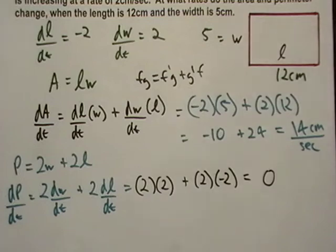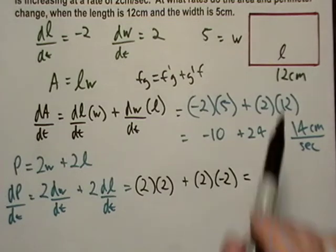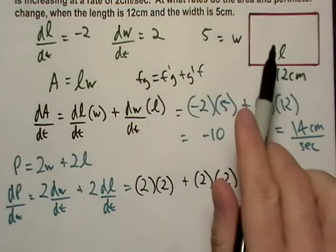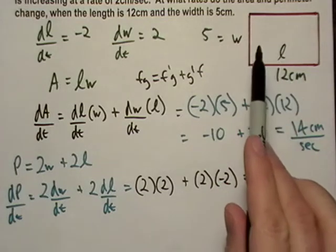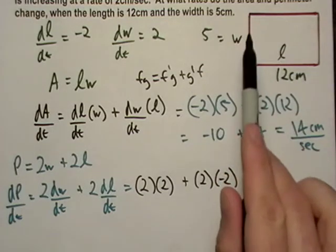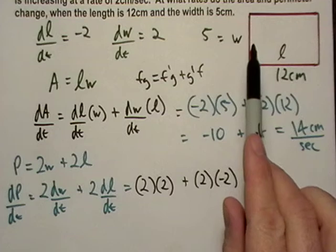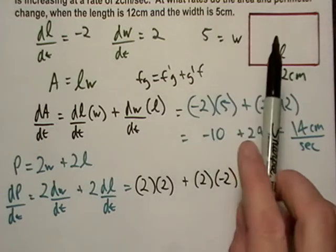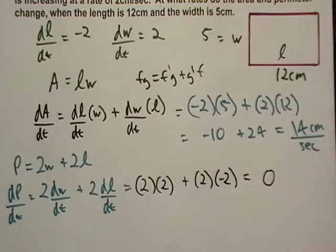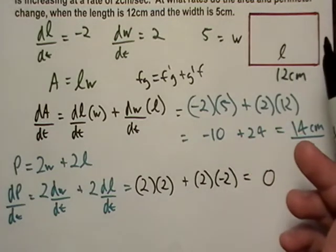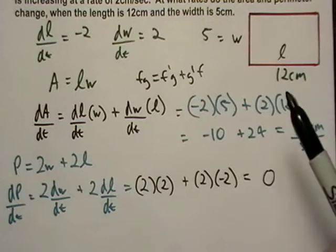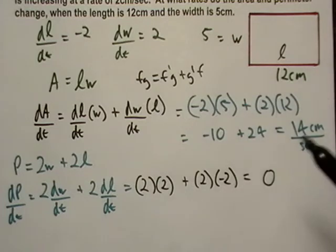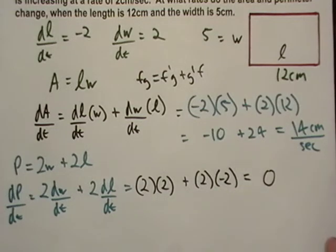So the perimeter should stay the same, and that makes sense. The area wouldn't stay the same, because that's just one thing. But the perimeter, you see we're taking, while the width is growing, the length is shrinking at the exact same rate, it's just the opposite, so if you just totaled these things up at any moment in time, they'd give you the same perimeter.